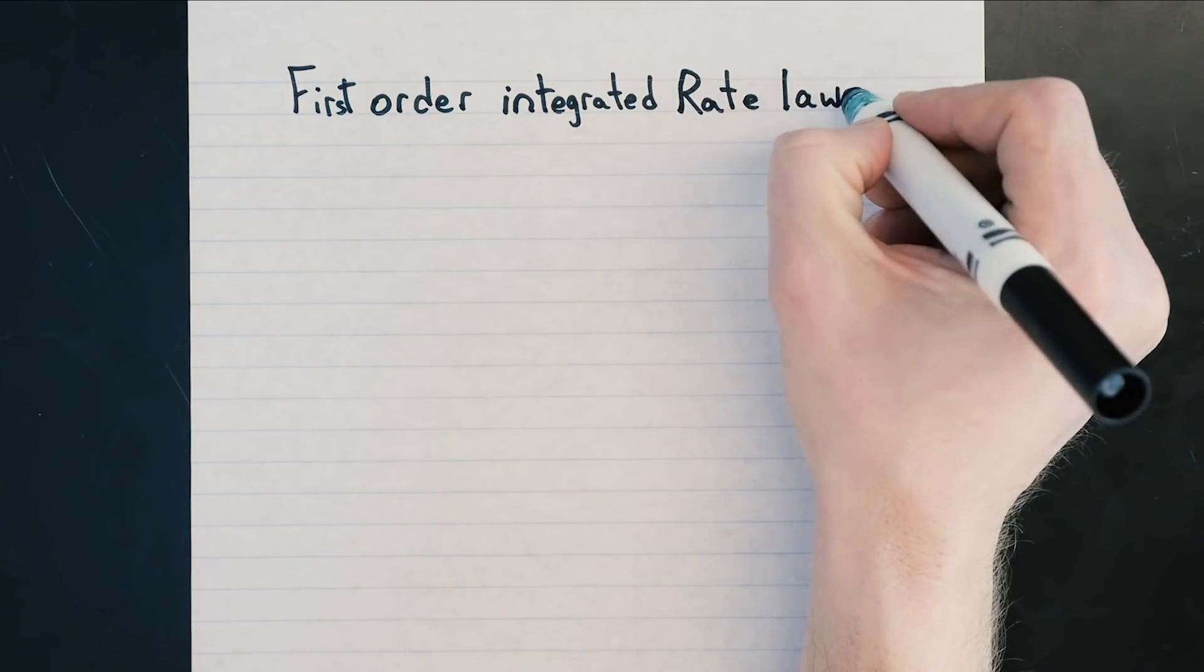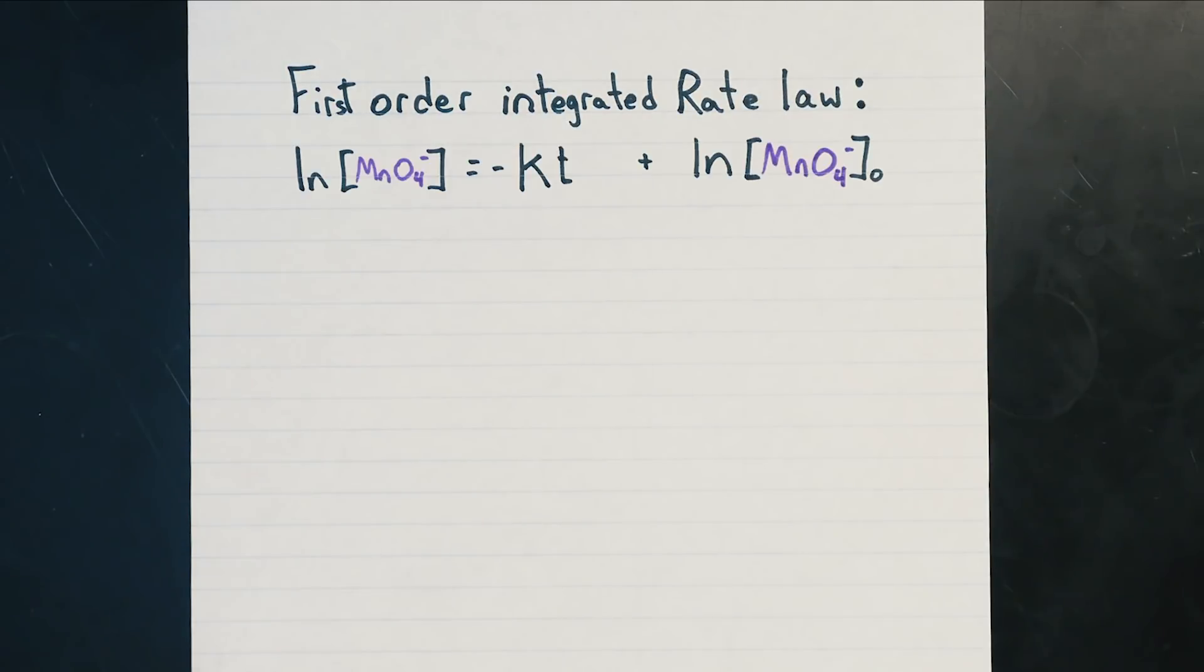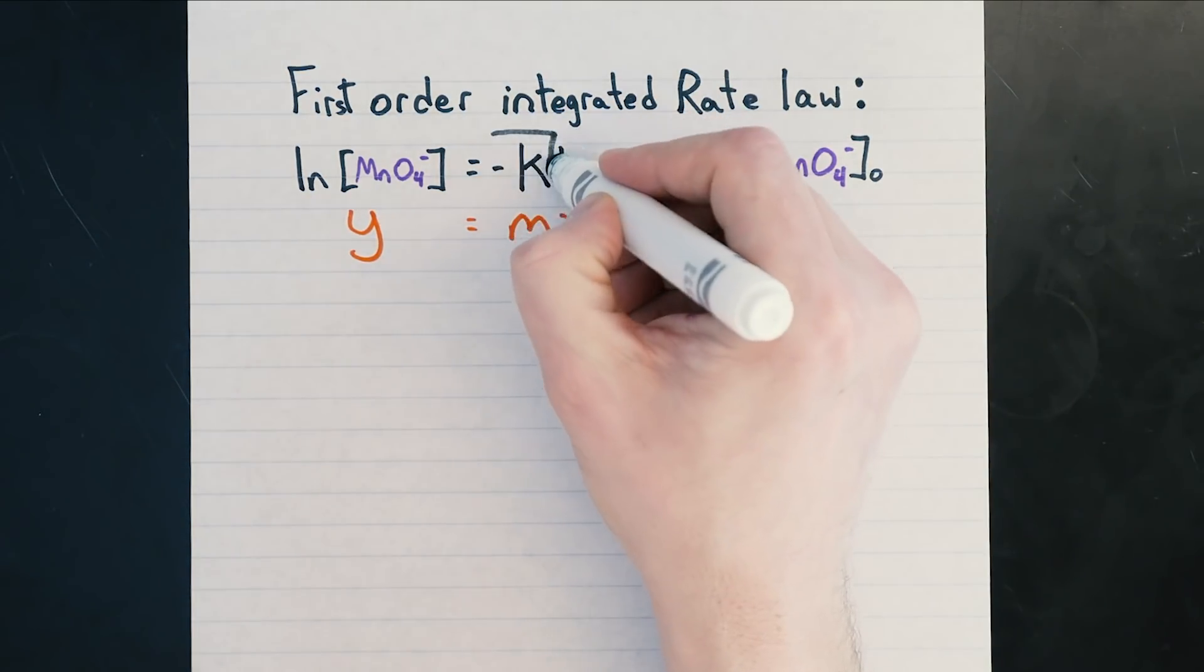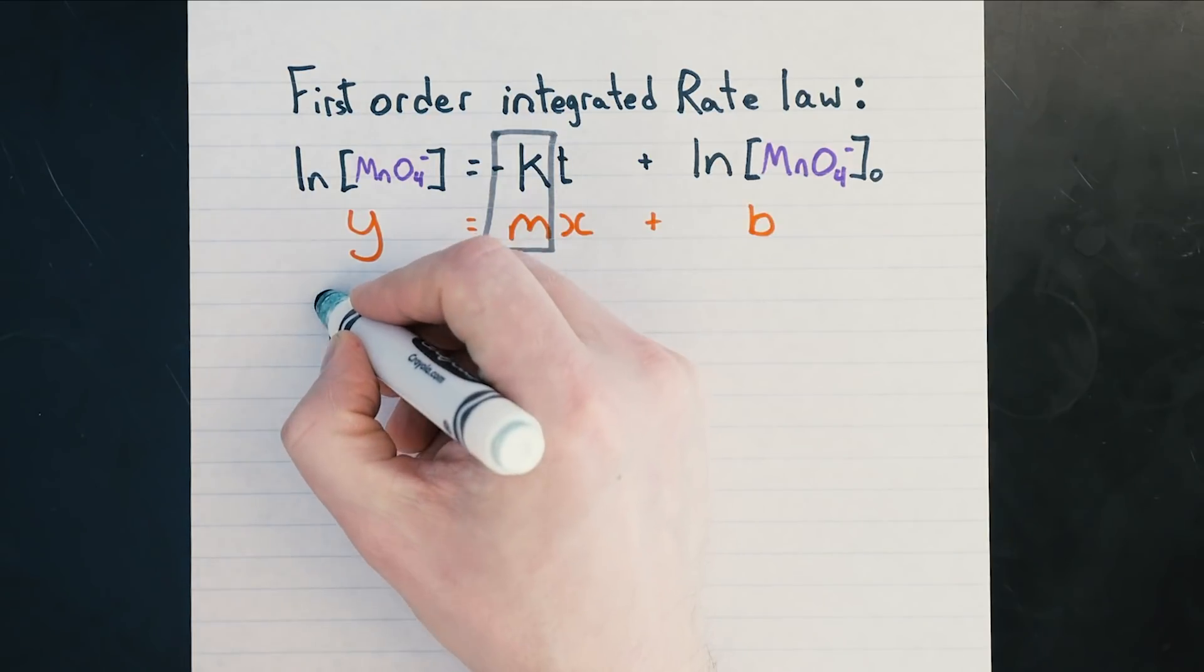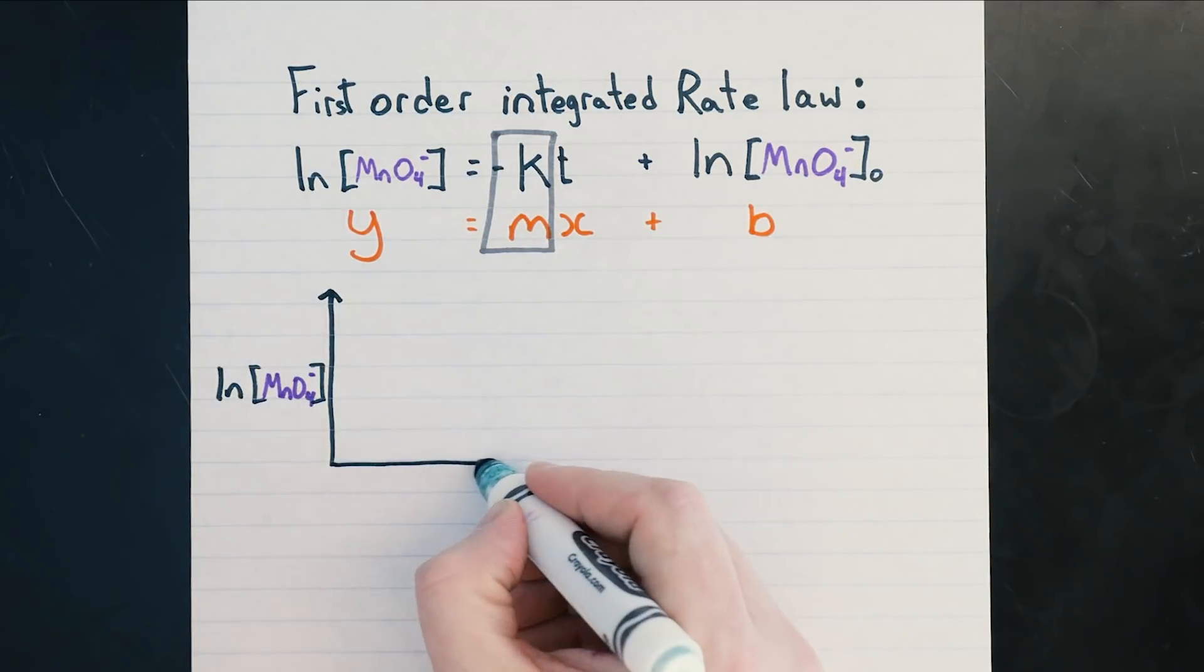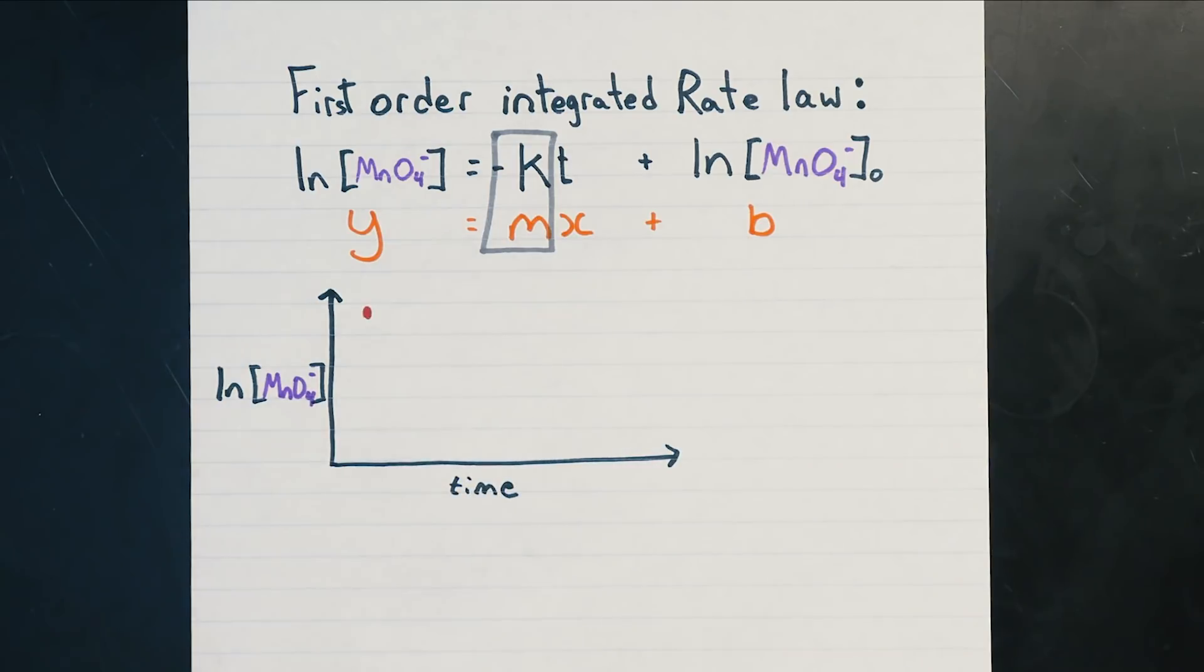Now to find the activation energy for this reaction, we need to determine the rate constants for each of our runs. Remember the first-order rate law and how it matches the equation of a straight line with the slope equal to the rate constant. Using our data, we can plot the natural log of concentration versus time and the data should be pretty linear.